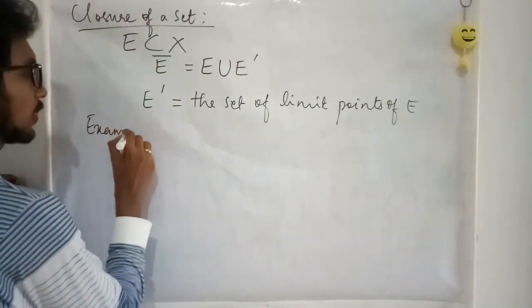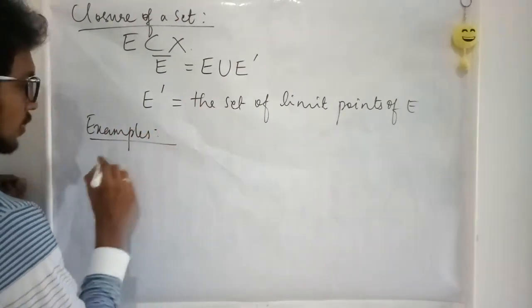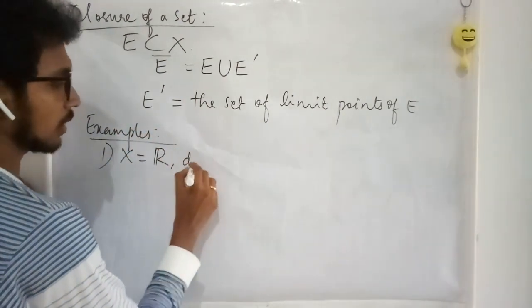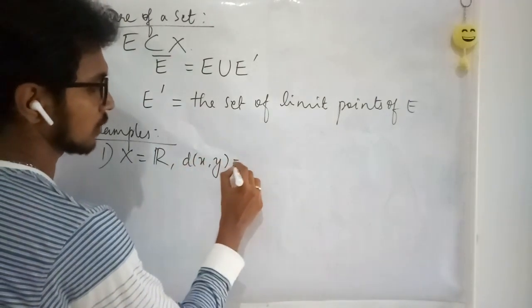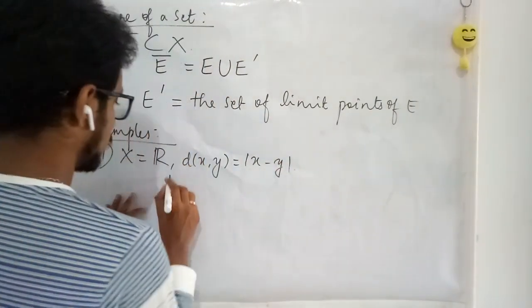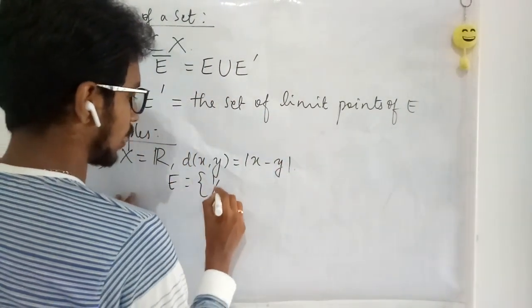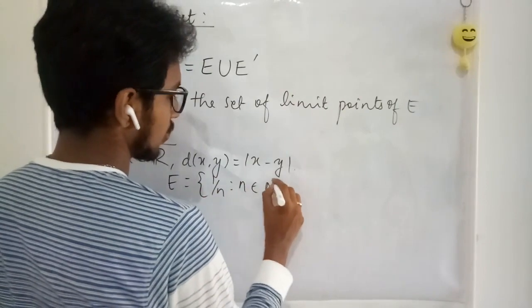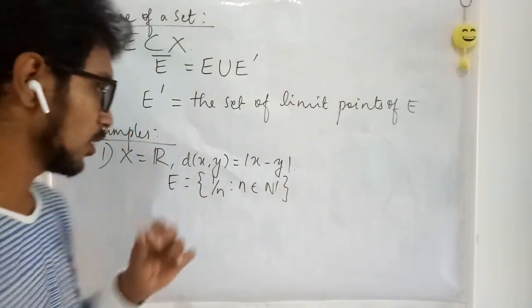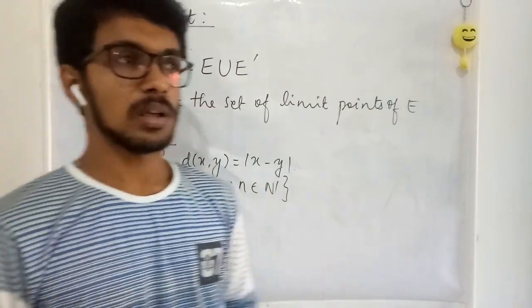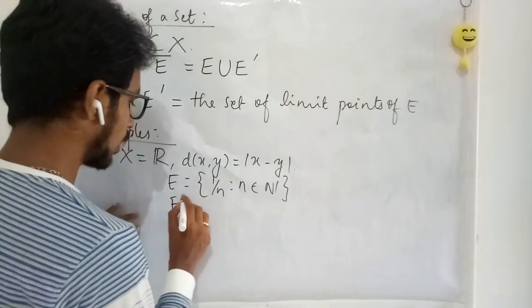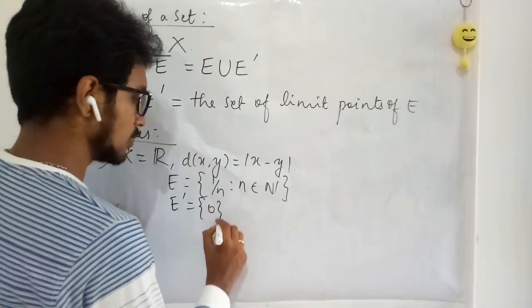Let us see a few examples for this closure. Let me take X to be the real line with the usual metric, and let me take my set to be the collection {1/n} where n runs over the natural numbers. In one of the previous lectures we have seen that the limit point of this set is going to be only one point, and it is 0.